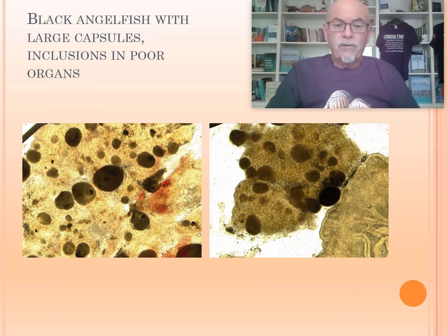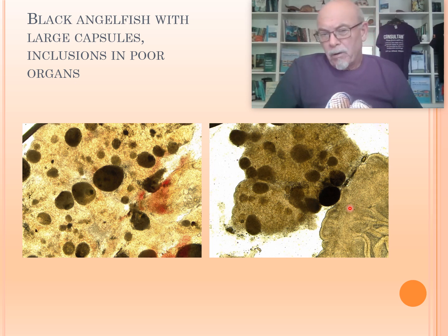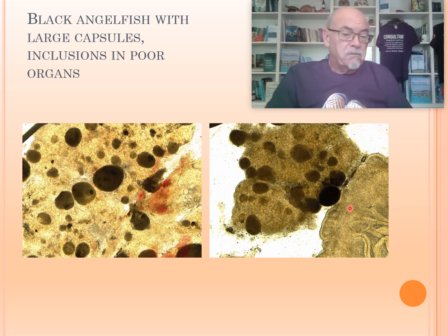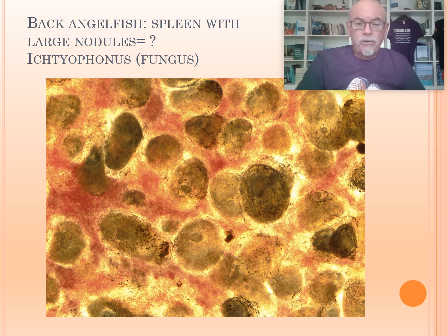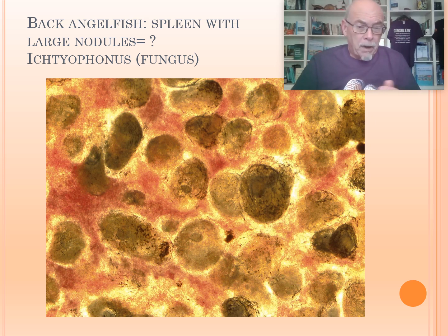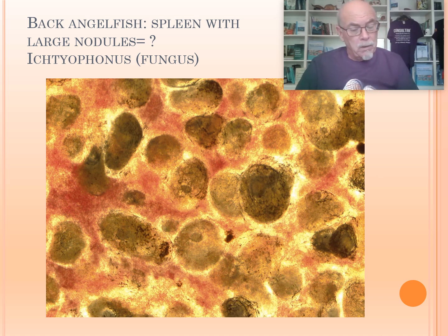Internally, we found nodules and inclusions — those capsules — in the kidney, in the spleen, and in the liver. It doesn't look exactly like a tubercle from Mycobacterium, but we don't know what it was. There might be some other inclusions caused by other viruses. It's not a parasite; usually it's a fungus or a bacteria that can cause it, sometimes a virus, but the organs are very badly gone.